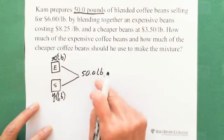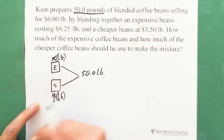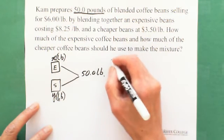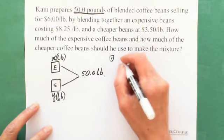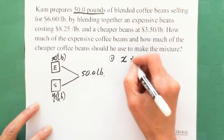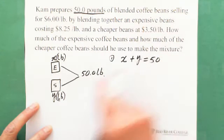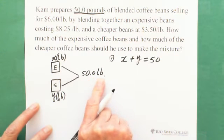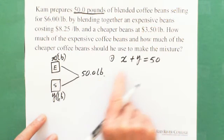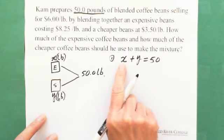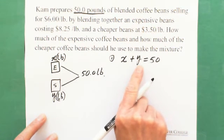They mix together, you get to 50. So that's why the first equation you can write, X plus Y equals 50. Right? Because total is 50 pounds. But we don't know how much the expensive one, how much for cheaper one.